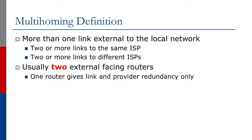So multi-homing means two or more links to the same ISP, or two or more links to different ISPs. The examples in the rest of this presentation will cover looking at links from the local network to at least two other networks.